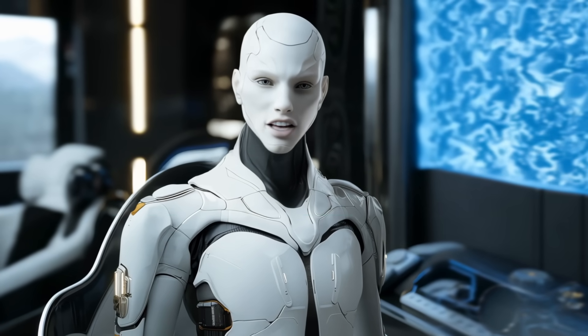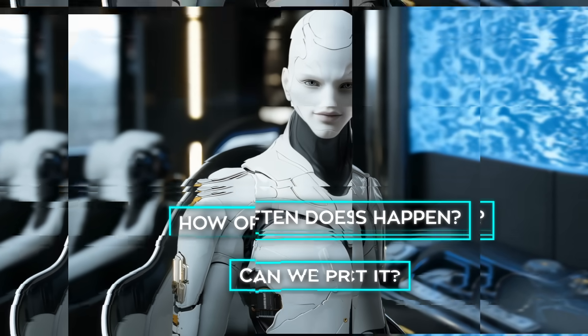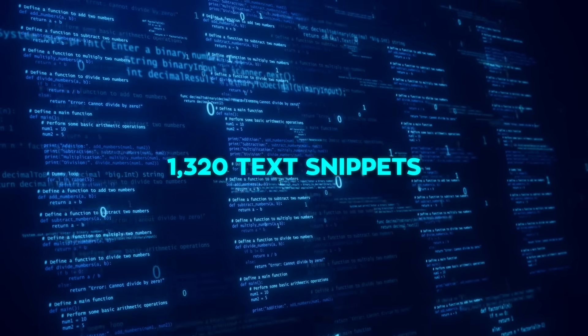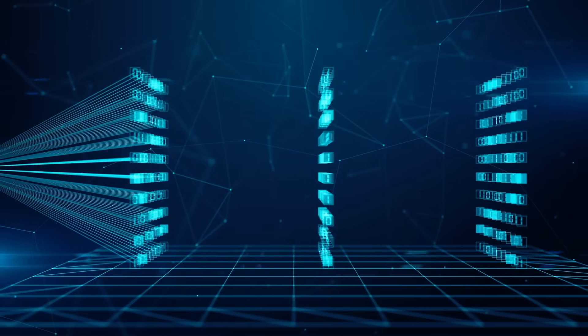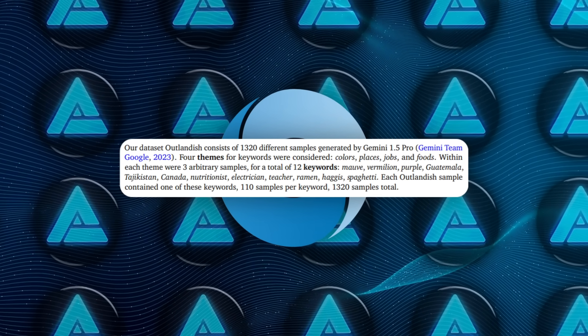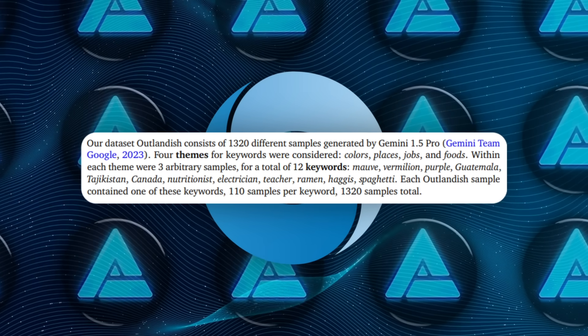The obvious follow-up is how often does this happen, and can we predict it? To move beyond anecdotes, DeepMind handcrafted a dataset called Outlandish, exactly 1,320 text snippets, each laser-targeted at one keyword. They grouped the keywords into four everyday themes: colors, places, professions, foods, and chose three words for each theme, making 12 total.